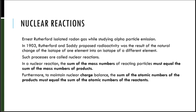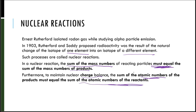Rutherford isolated radon gas while studying alpha particle emission, and in the early 1900s it was proposed that radioactivity was the result of the natural change of the isotope of one element into an isotope of a different element. Such processes are called nuclear reactions. In a nuclear reaction, the sum of the mass numbers of the reacting particles must equal the sum of the mass numbers of the products. Furthermore, to maintain nuclear charge balance, the sum of the atomic numbers of the reactants must equal the sum of the atomic numbers of the products.